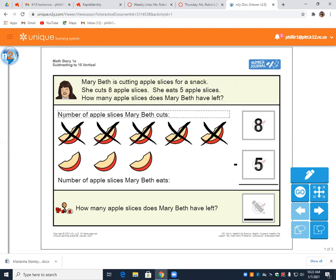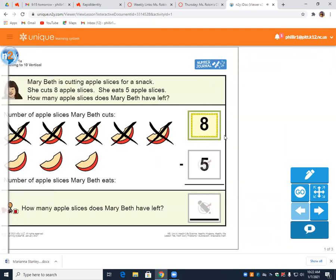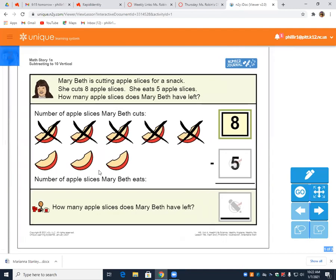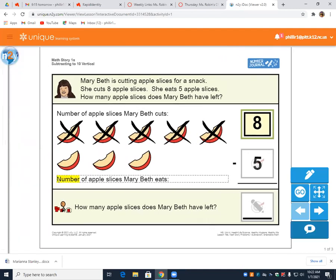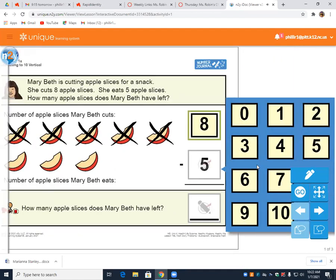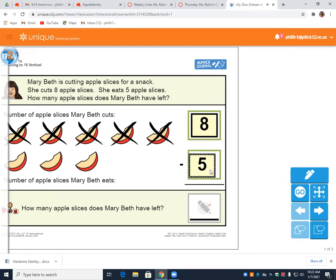So let's see. Number of apple slices Mary Beth cuts. Eight. Mary Beth cuts eight slices. Let's move over. All right. Number of apple slices Mary Beth eats. How many does she eat? Anyone know? All right. Very good. Thank you so much. She eats five apple slices. Somebody's awake this morning. Glad to hear it.